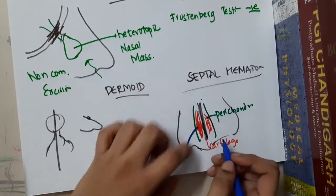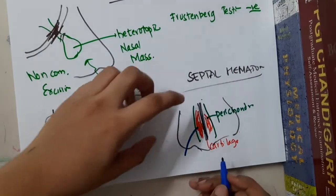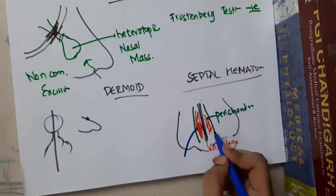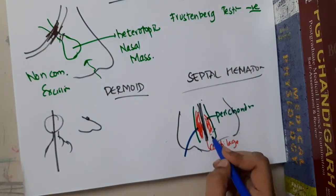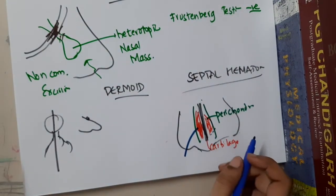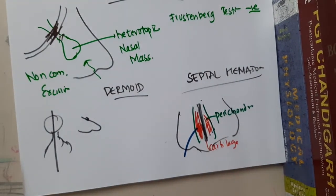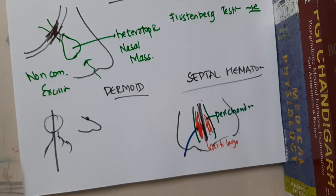If it is a large hematoma, you should make an incision and drain the septal hematoma. In septal hematoma, we do not do conservative management — we should always drain it.